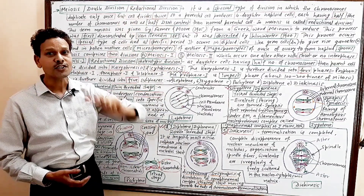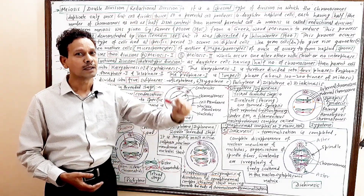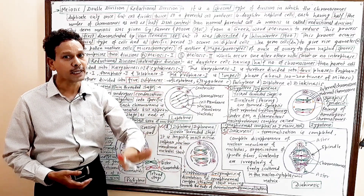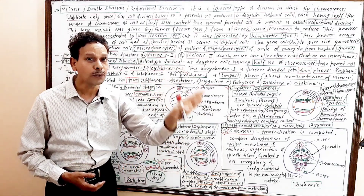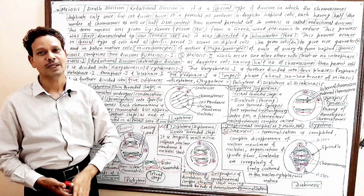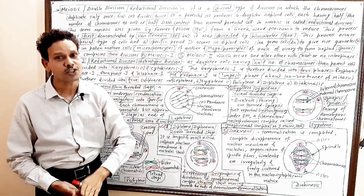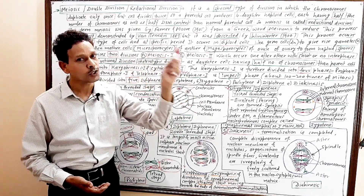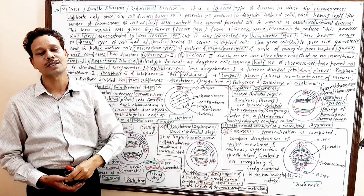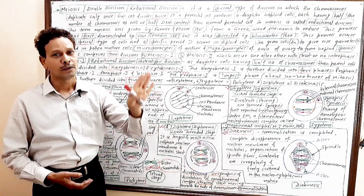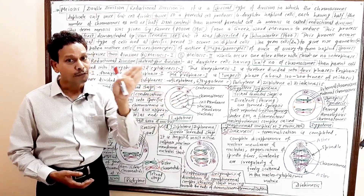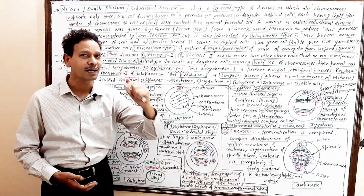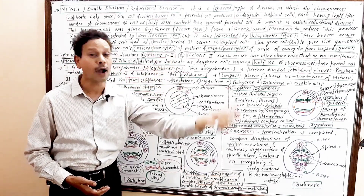That is why it is a reductional division — the chromosome number and DNA content are reduced to half. It is a double division because the parent cell divides twice, giving rise to four haploid daughter cells. It is a characteristic feature of all diploid cells having two sets of chromosomes.